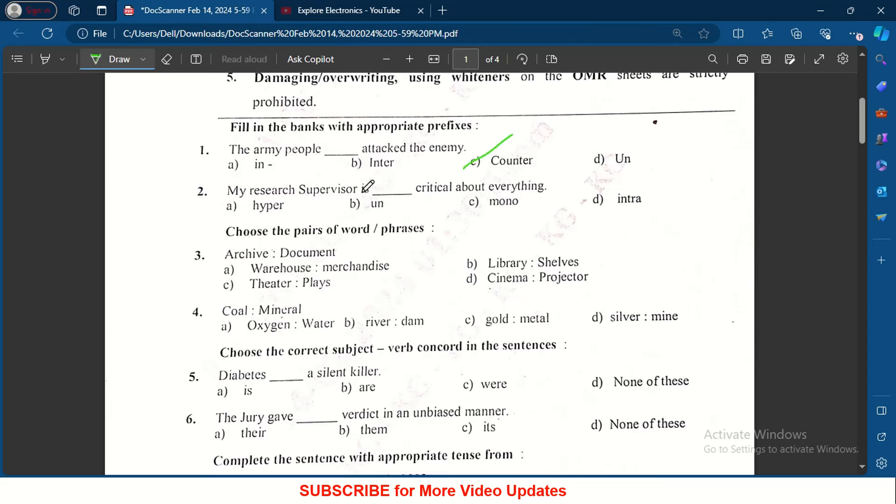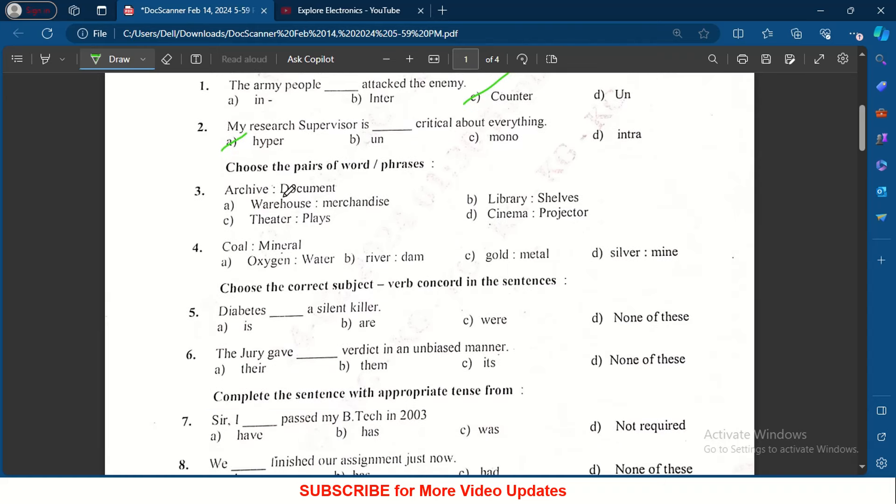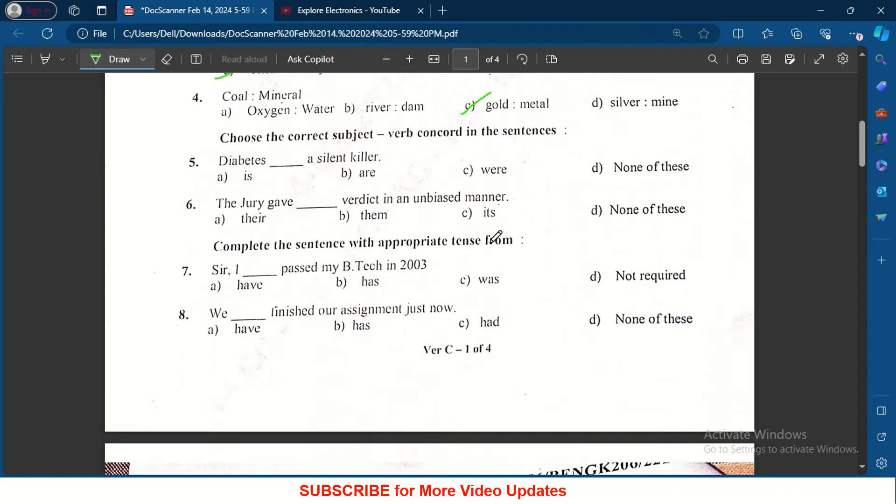My research supervisor is dash critical about everything - hypercritical. Choose the pair of words or phrases: archive or document, like that theatre place is the correct one. Whole mineral, similarly we have gold and metal.